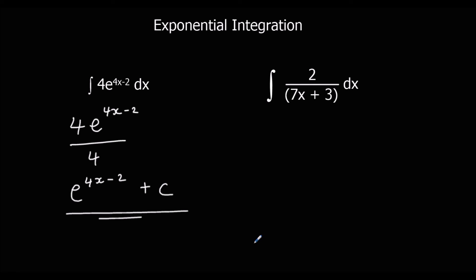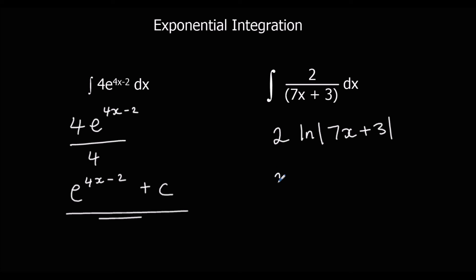The second question — we integrate it normally, so 2 ln of 7x plus 3, divide by the bracket differentiated which is 7. That gives us 2 over 7 ln of 7x plus 3, plus c.